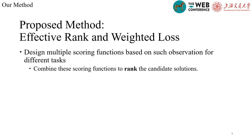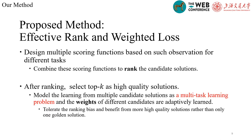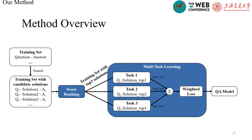First, we design multiple scoring functions based on these observations for different tasks, and then combine them to rank the candidate solutions. After ranking, we select top-K as high-quality solutions, and we model the learning from multiple high-quality solutions as a multi-task learning problem, where the weights are adaptively learned. Through this method, we can tolerate the ranking bias and benefit from more high-quality solutions rather than only one. After searching candidate solutions for each question-answer pair, we use our score ranking method to rank them, select top-3, and update model parameters using the final weighted loss.